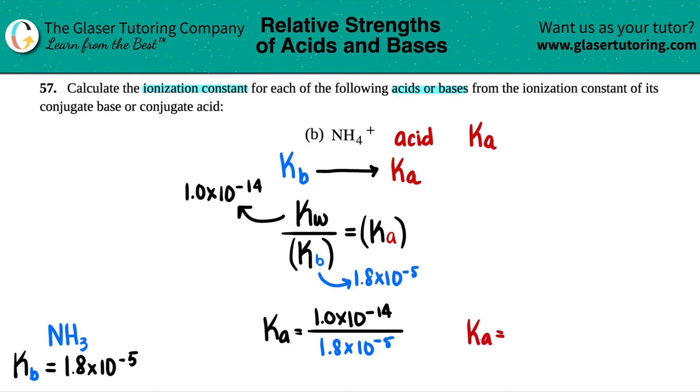So 5.6, 2 sig figs. Yeah. 5.6 times 10 to the negative 10th.